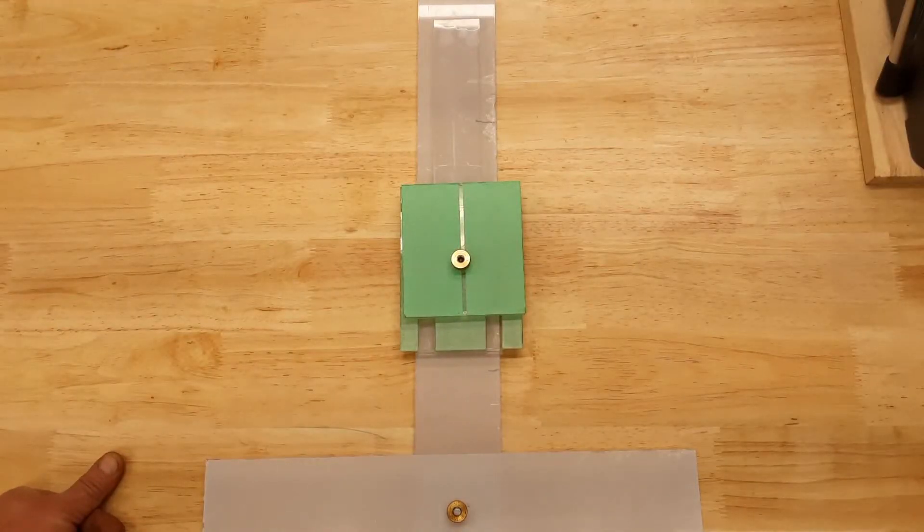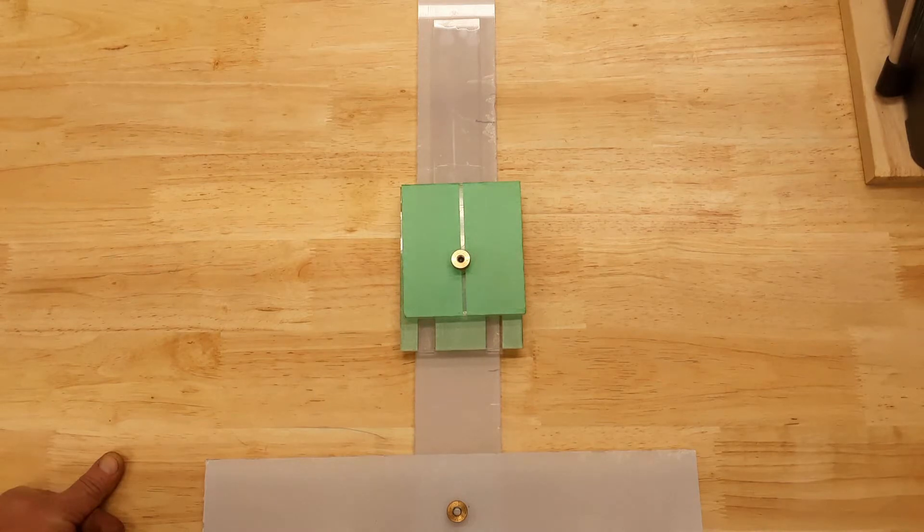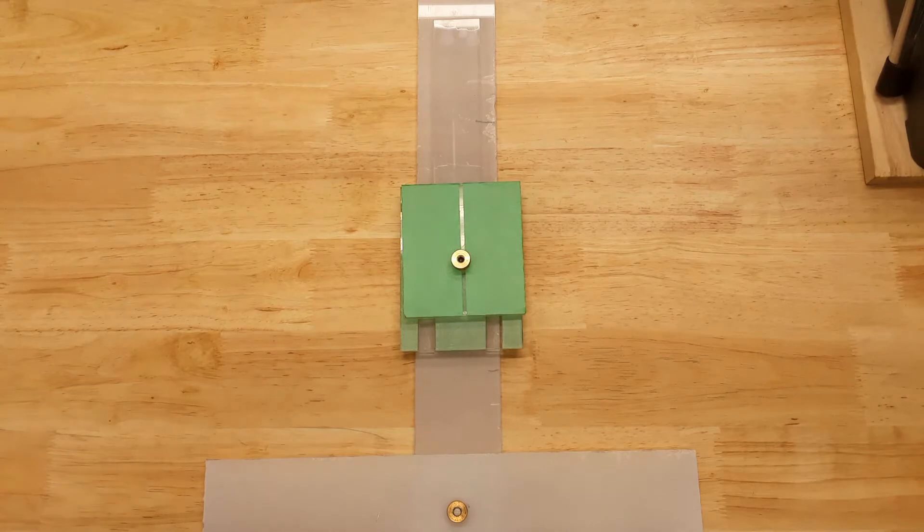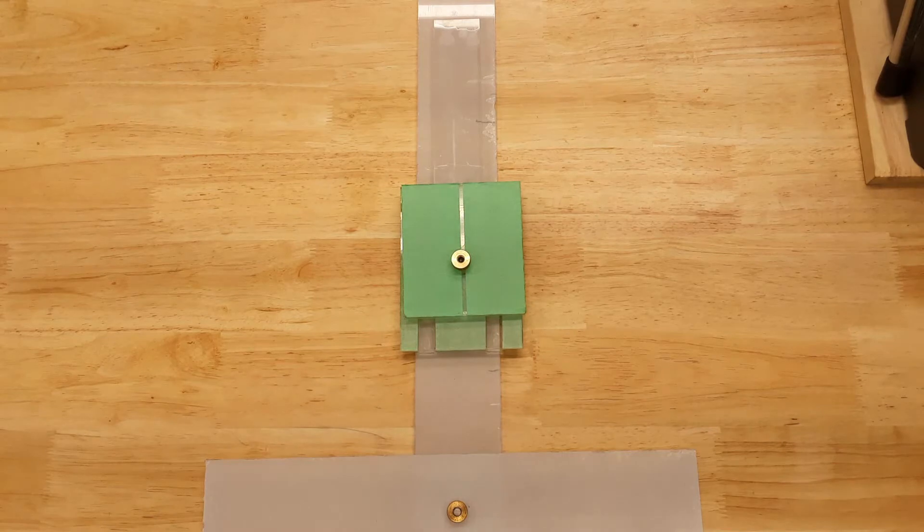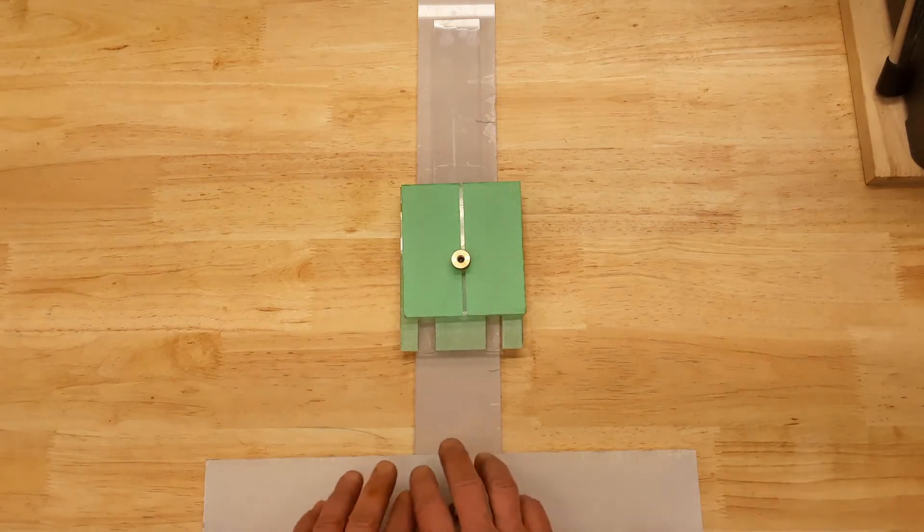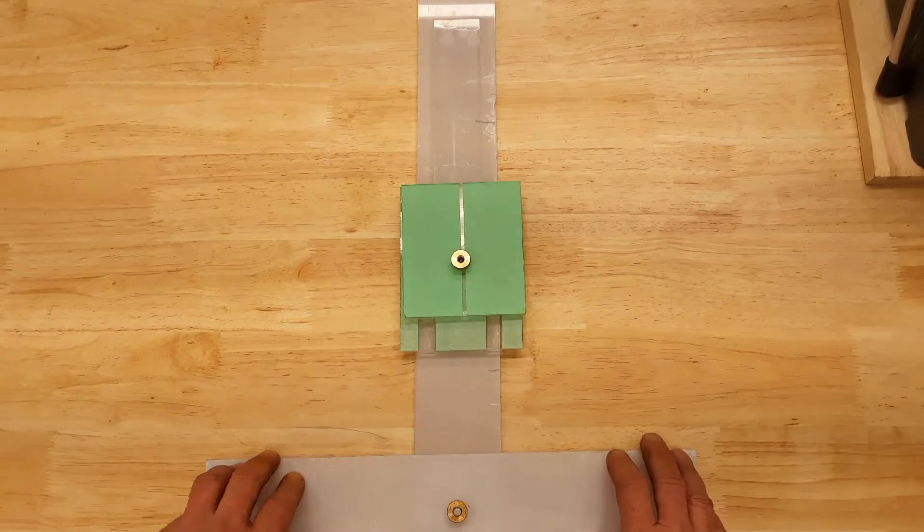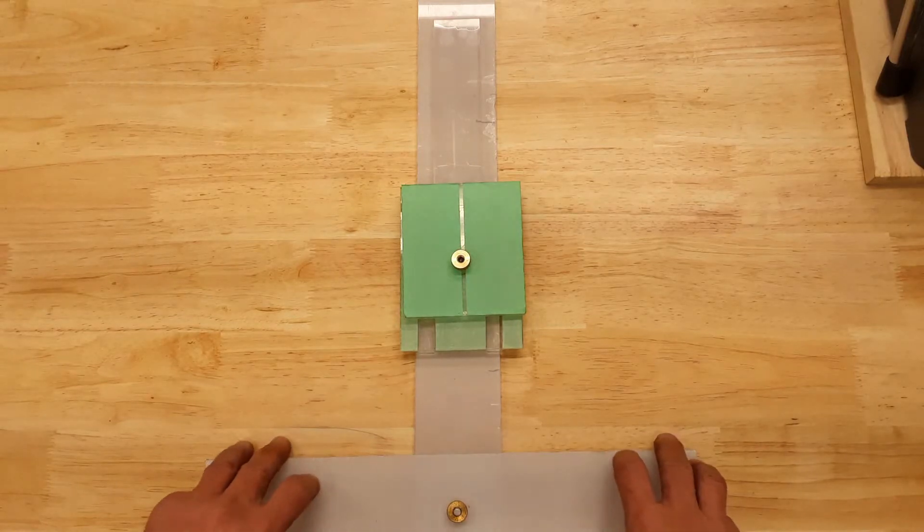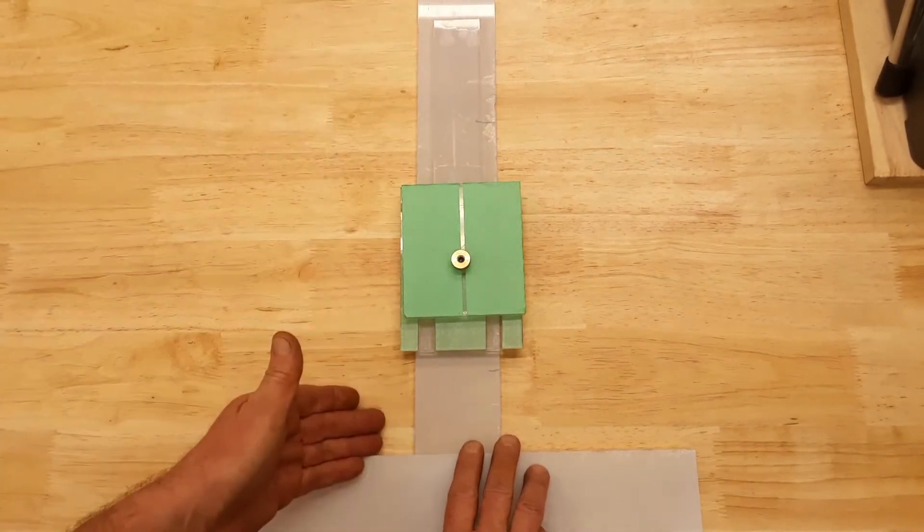Hello, today using this simple model of the mini mill, I would like to see what is the geometry behind the recommended procedure of tramming the mini mill. Let's assume this is our mini mill table and this is the column which is movable.